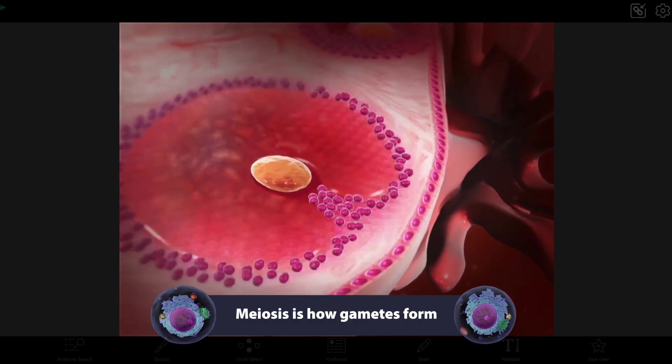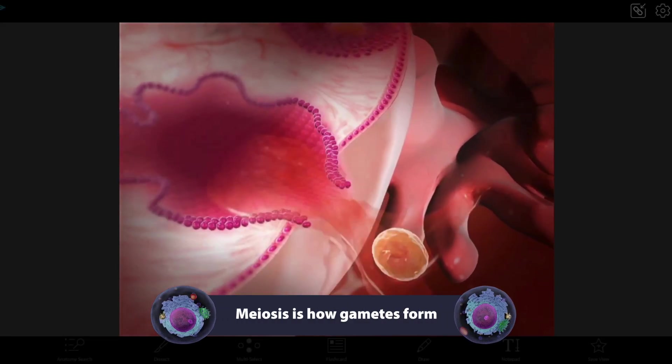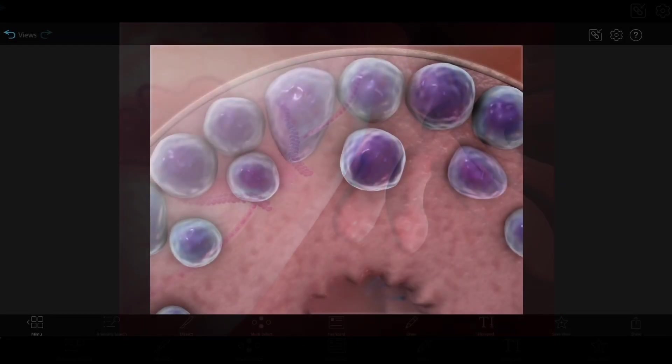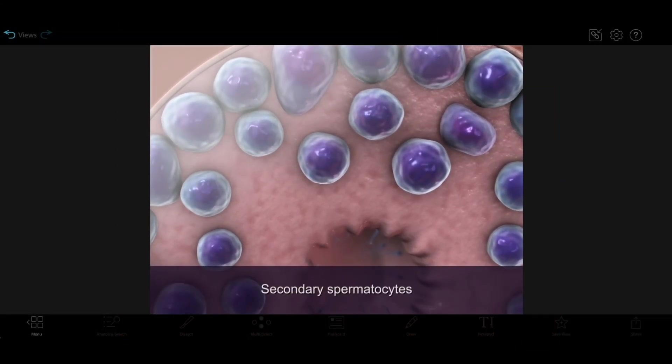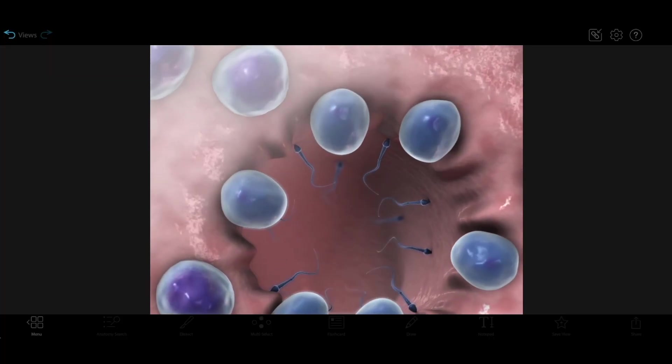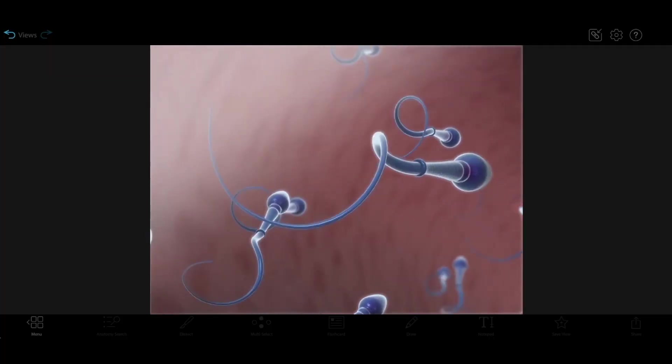Meiosis is how gametes or sex cells are formed. In humans, these are sperm and egg cells. You can use the male sex cells and female sex cells animations in VB Suite to learn more about these specific gametes and the important role meiosis plays in their production.